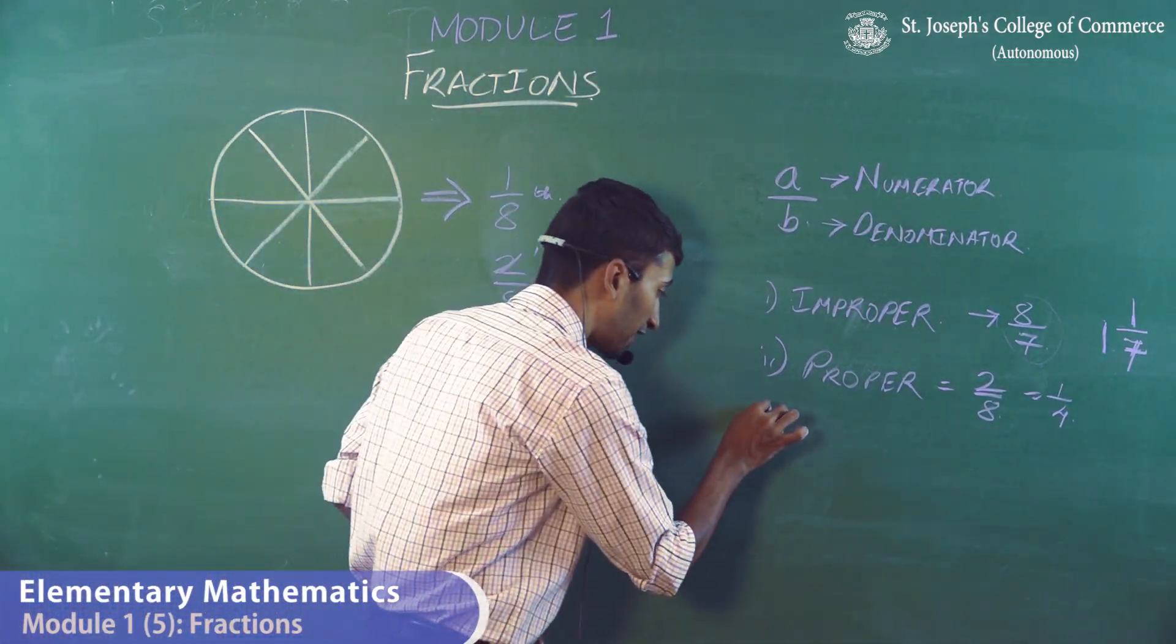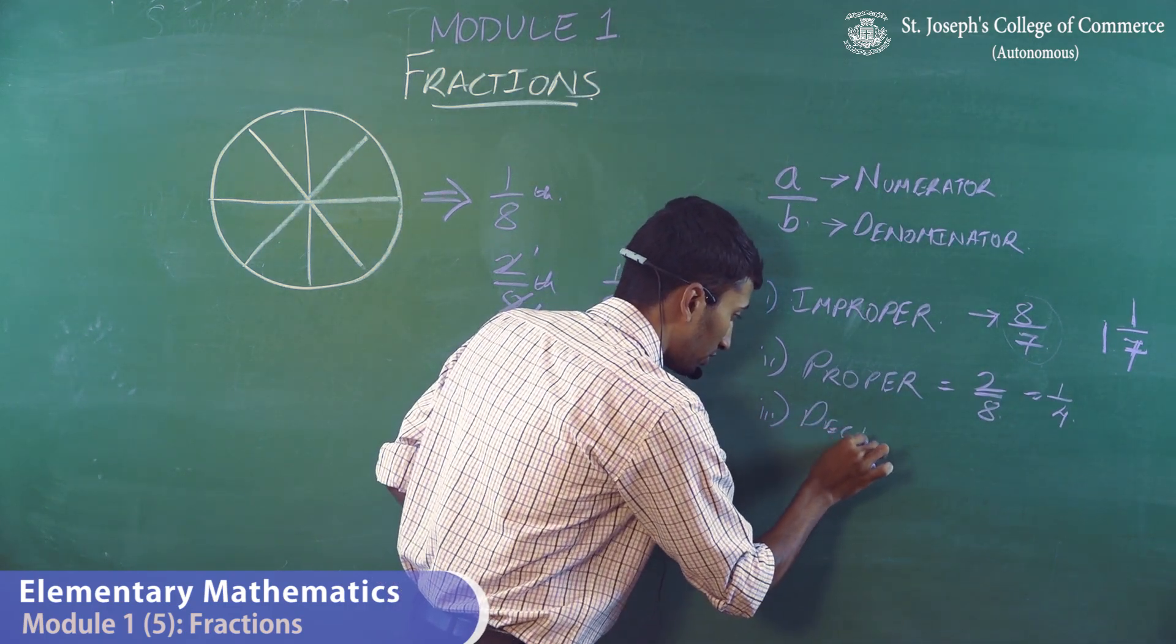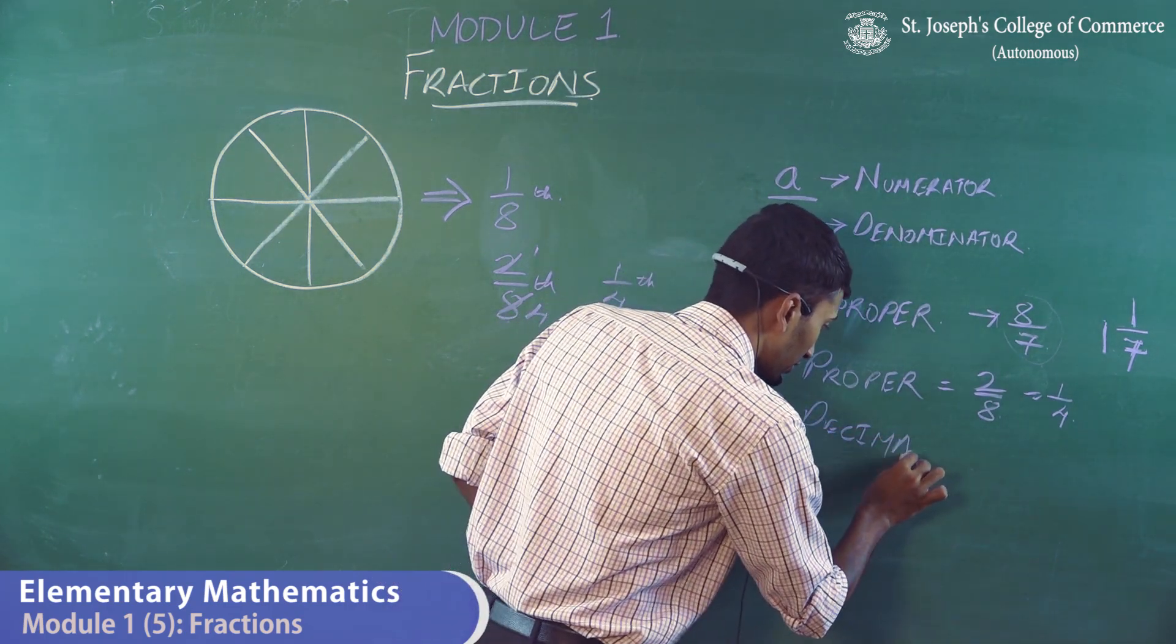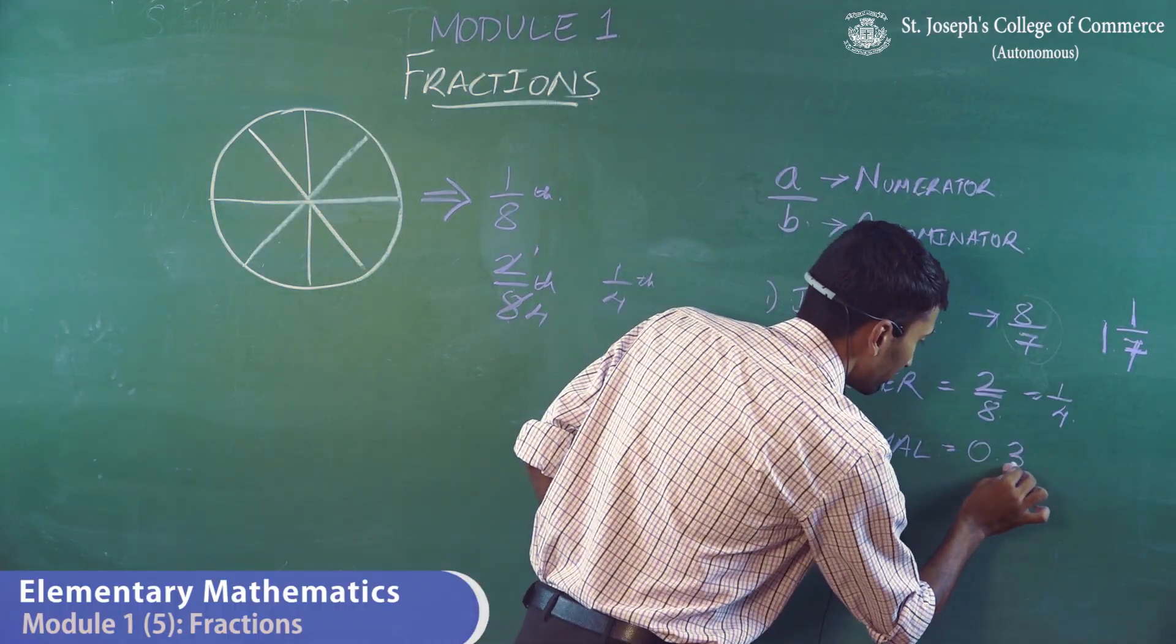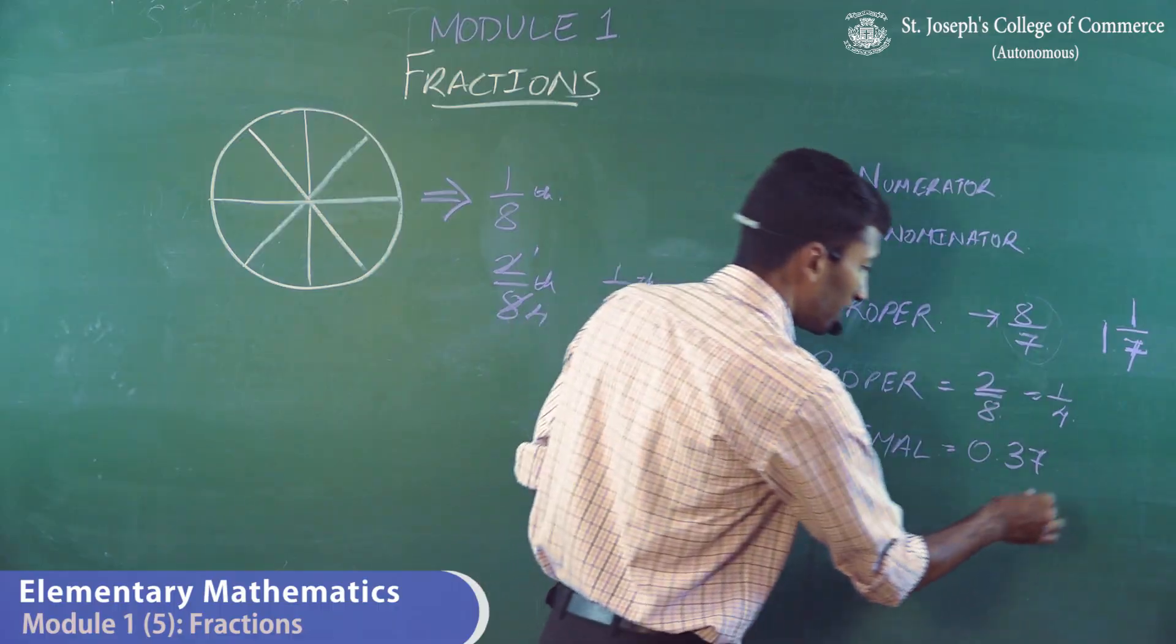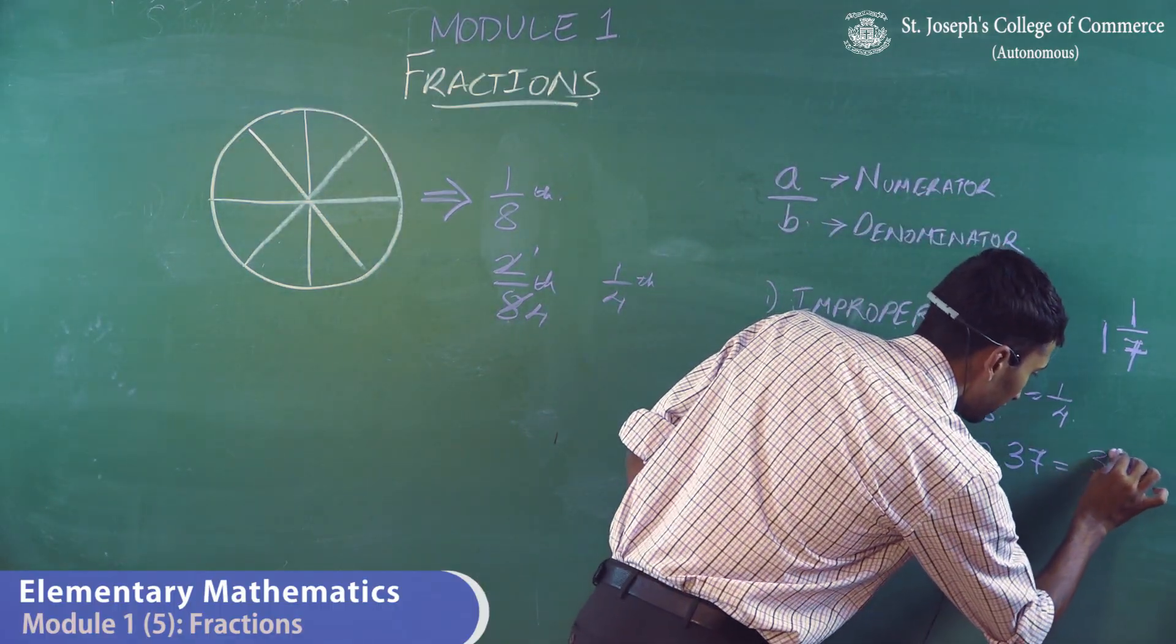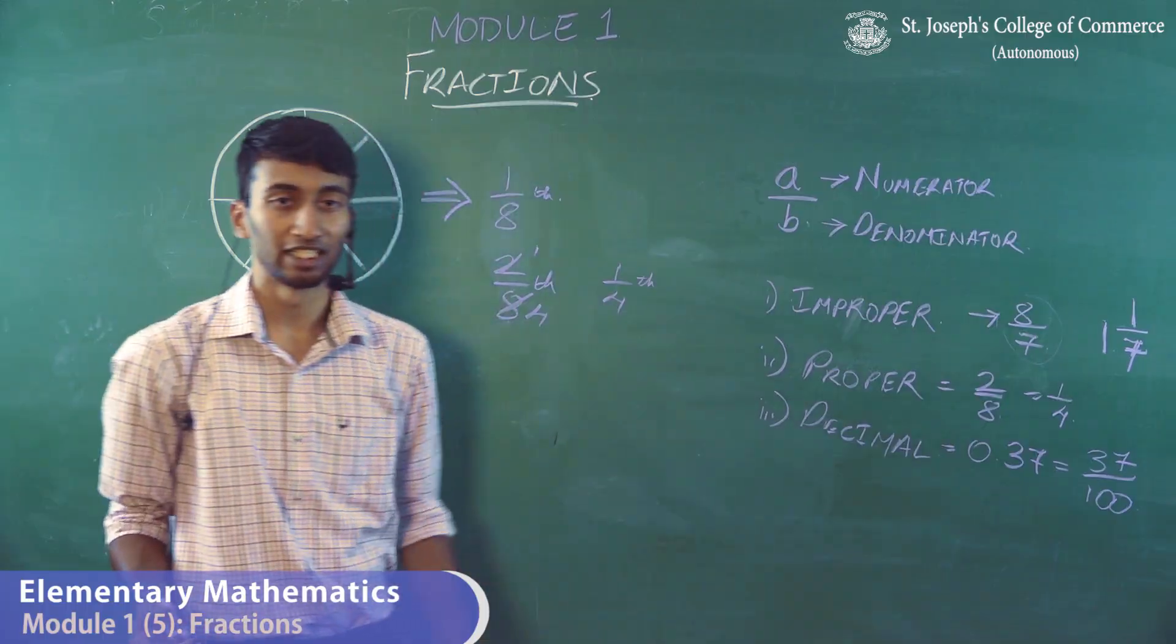And then there's something called decimal fraction, where, say for example, 0.37 is your decimal. To convert that into a fraction, it is 37 by 100. So 0.37 is your decimal fraction.